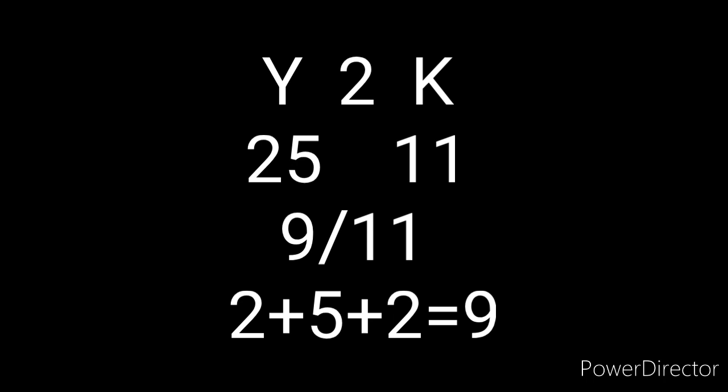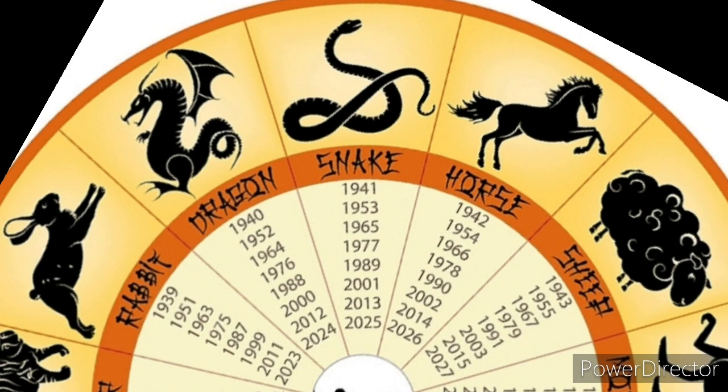So Y2K is actually pointing to 9-11, which happened the next year in 2001, which is the year of the serpent. And so is the year 2025 — it is also the year of the snake or the year of the serpent. And like I've shown before, 20 times 25 is 500, and 500 in the concordance Greek is Antichrist. So you have 9-11 happening in the year of the serpent, in which 24 years later, the Antichrist will be revealed in the year of the serpent.